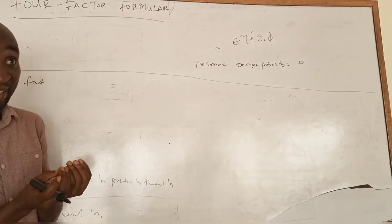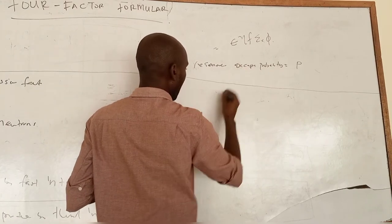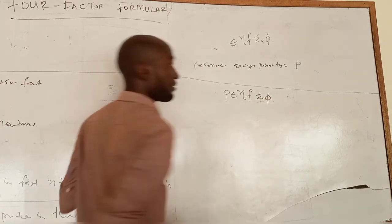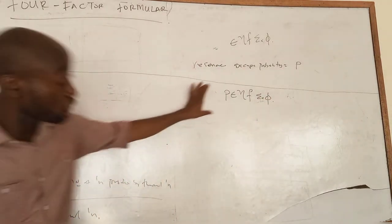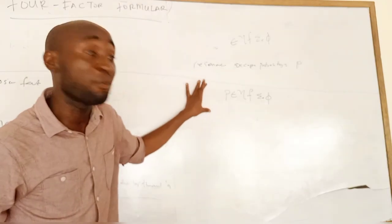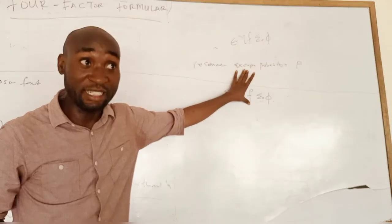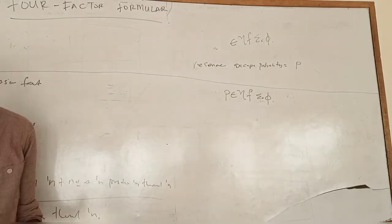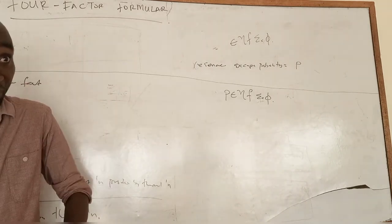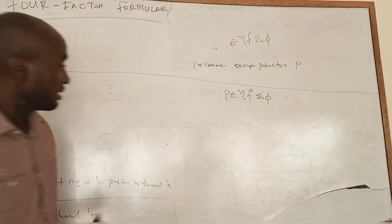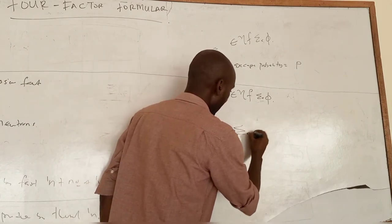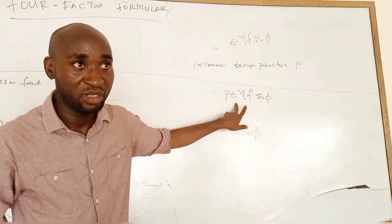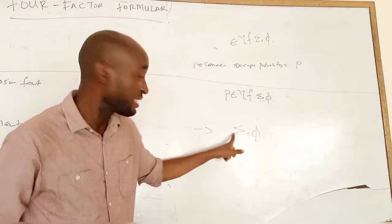The resonance escape probability P is the probability that a neutron being slowed down will escape the resonance region. For example, if 100 neutrons are being slowed down and 10 are captured in the resonance region, then 90 reach thermal energy, and P equals 90/100. The number of thermal neutrons available from the preceding generation is Σ_A·φ, and with resonance escape, we multiply by P.